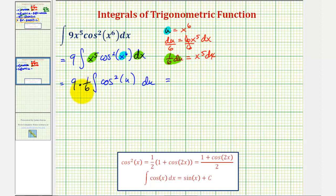So we have nine-sixths here, which is three-halves, times the integral of... when we perform this substitution, notice we'll have a factor of one-half which we'll factor out. So we have three-halves times one-half times the integral of the quantity one plus cosine two u.